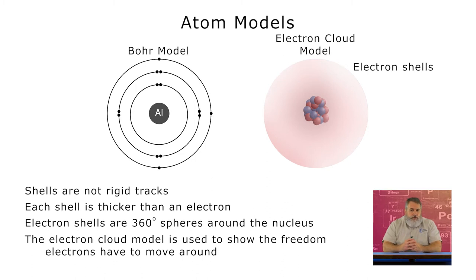The electron cloud model shows where the electrons may be at any given point in time. Since each orbital is thicker than the width of an electron, and each orbital is not a circle but a sphere around the nucleus, the electrons can be pretty much anywhere within the 360 degree space around the nucleus as long as it's within the boundaries of its shell.